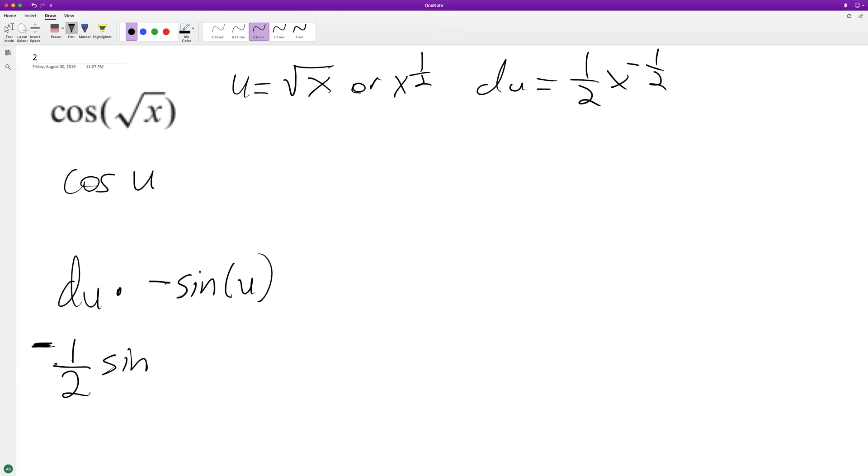Actually, I made a mistake. I didn't include x raised to the negative one half times the sine. So filling back in, we have sine of square root of x, and if we want, we can put this x raised to the negative one half on the bottom.